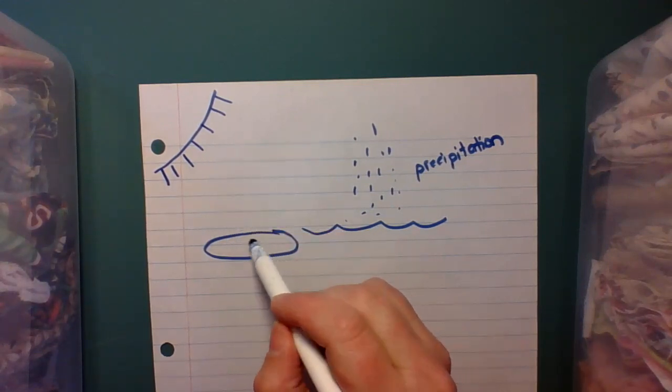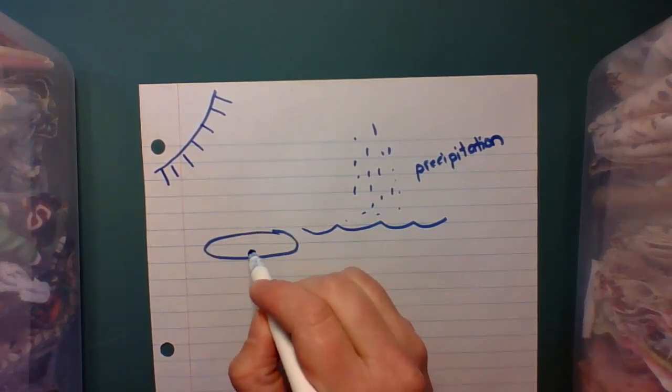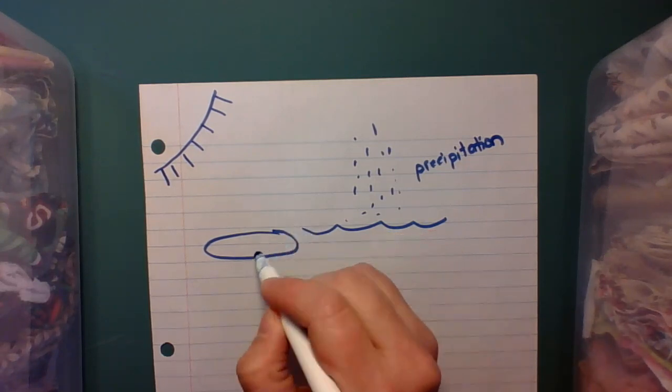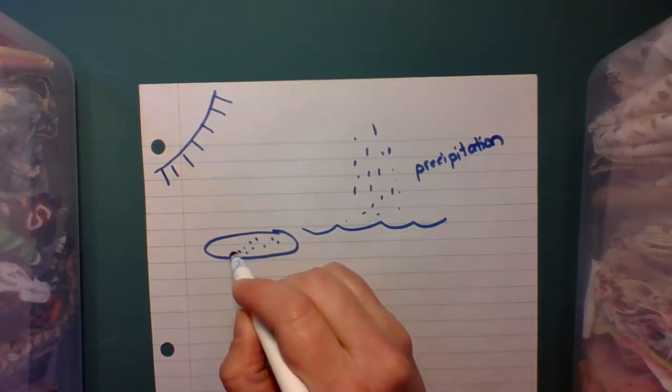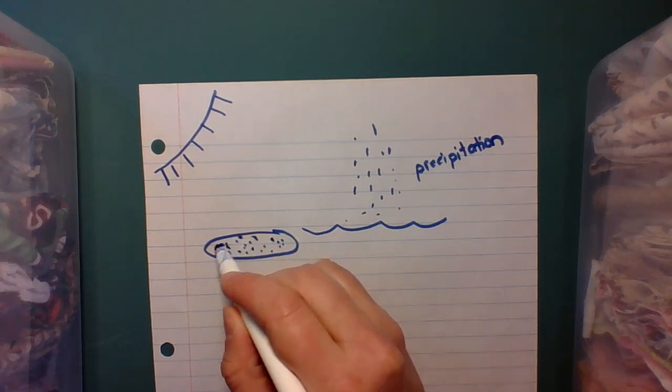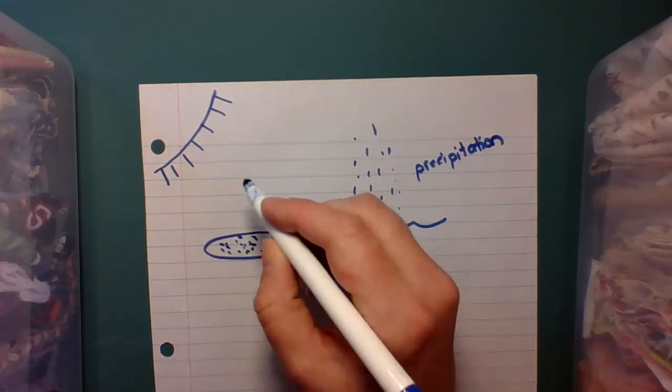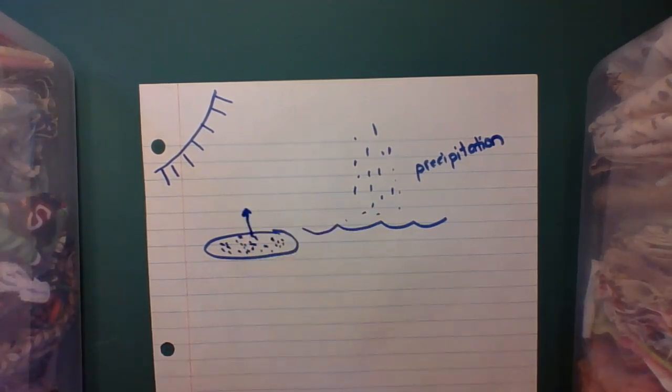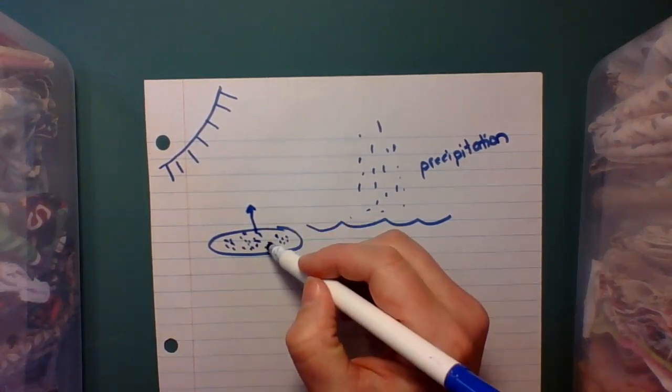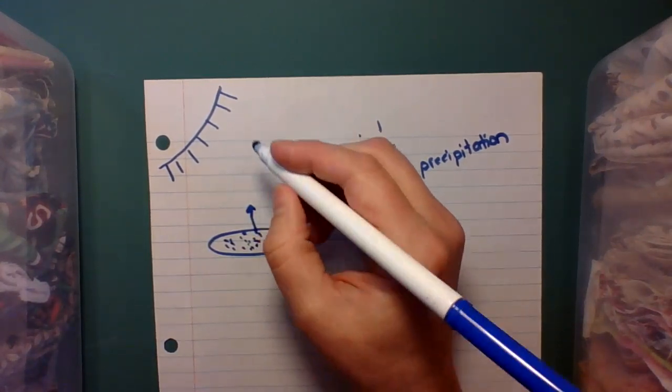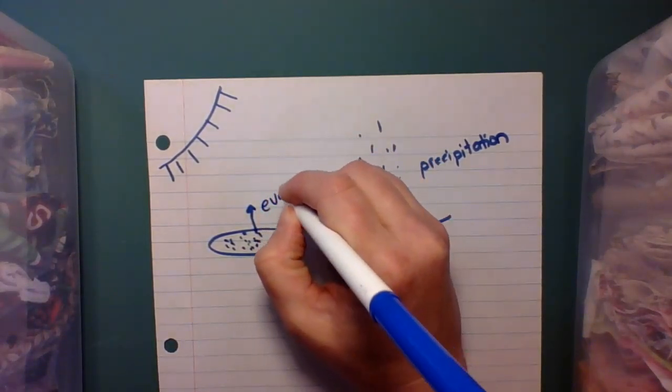But this whole process, you know this because of your notes, is driven by the heat of the sun. So the sun hits the puddle. Those water droplets, it's the state of matter, the water, of course. But the speed of those molecules, those water particles, they speed up until they become water vapor. So they're turning from a liquid into a gas. And this is called evaporation.